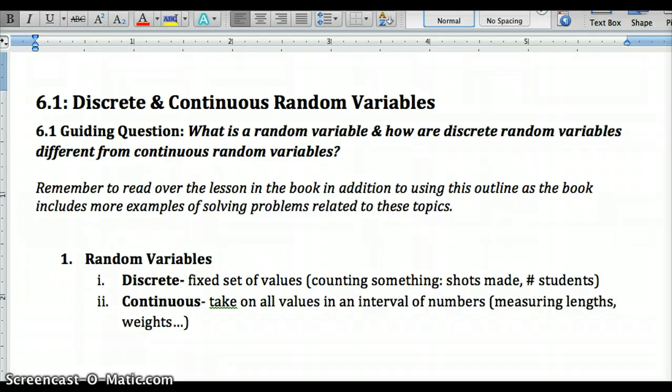A random variable takes numerical values that describe an outcome or a result of some chance process, whether it's flipping a coin, something like that. The probability distribution of a random variable will let us know all the possible values and their probabilities, how likely they are to appear. A random variable, remember, it's an outcome of a chance process. Discrete means a fixed set of values. So if we're talking about a variable like number of heads, number of tails, we can't have 1.5 heads, 2.5 tails. So it's discrete. There's a fixed set of values, counting how many shots you make. Continuous takes on all values in an interval, like measuring lengths or weights, that sort of thing.